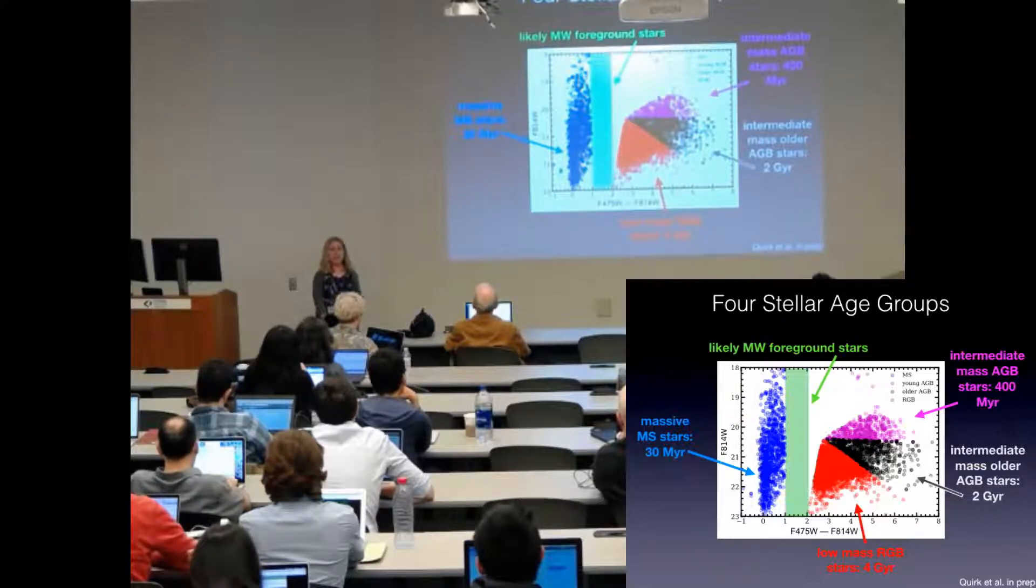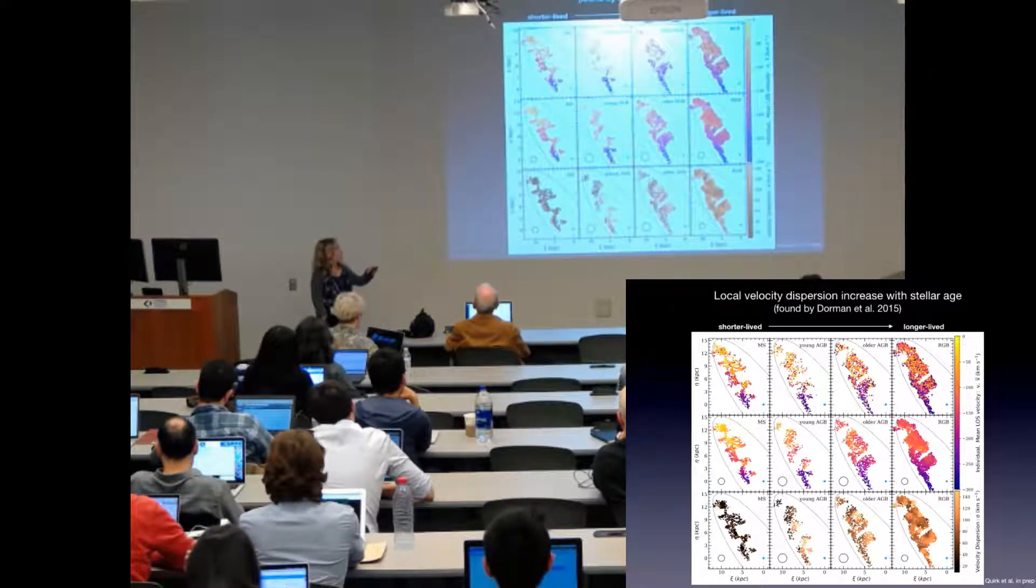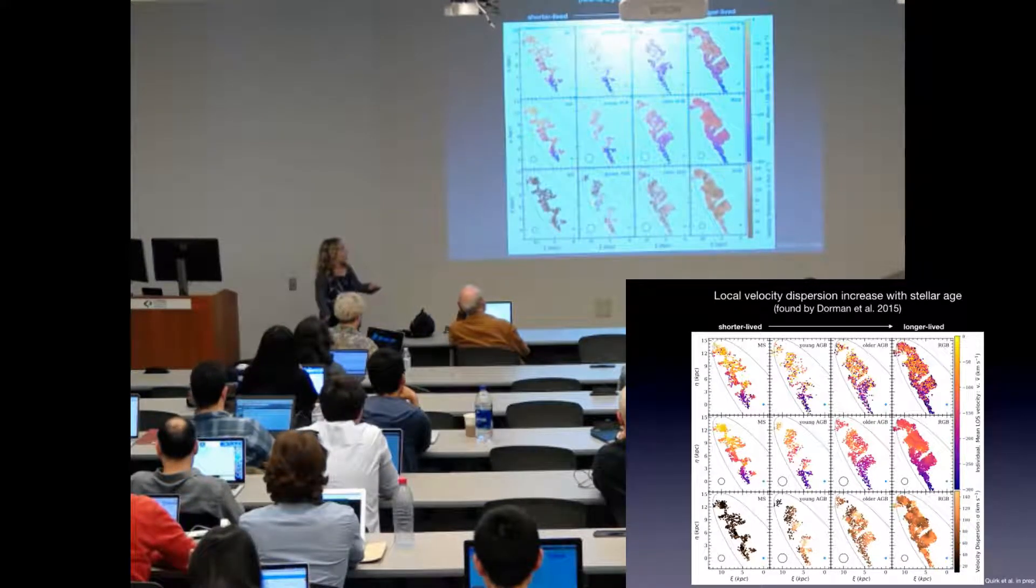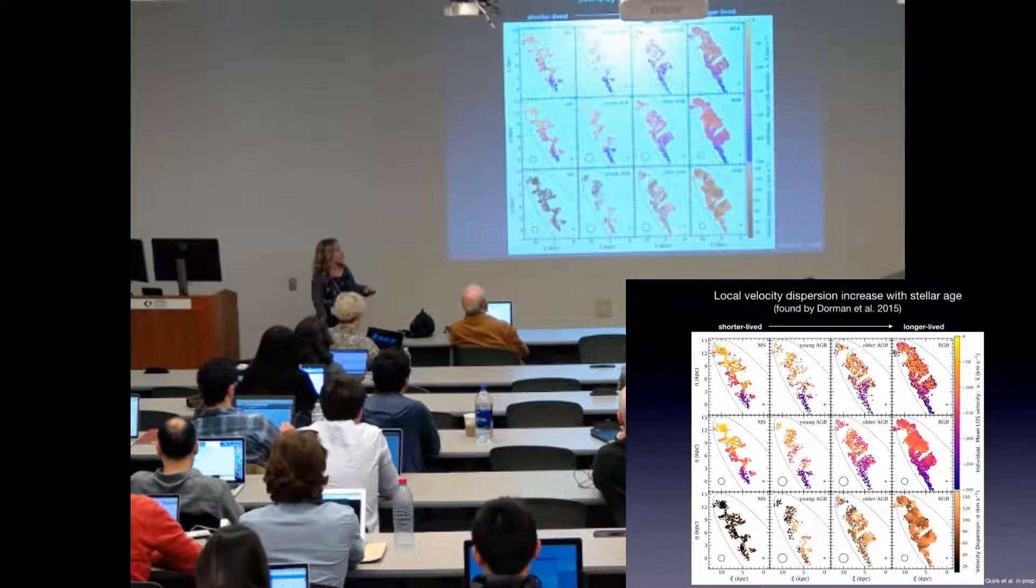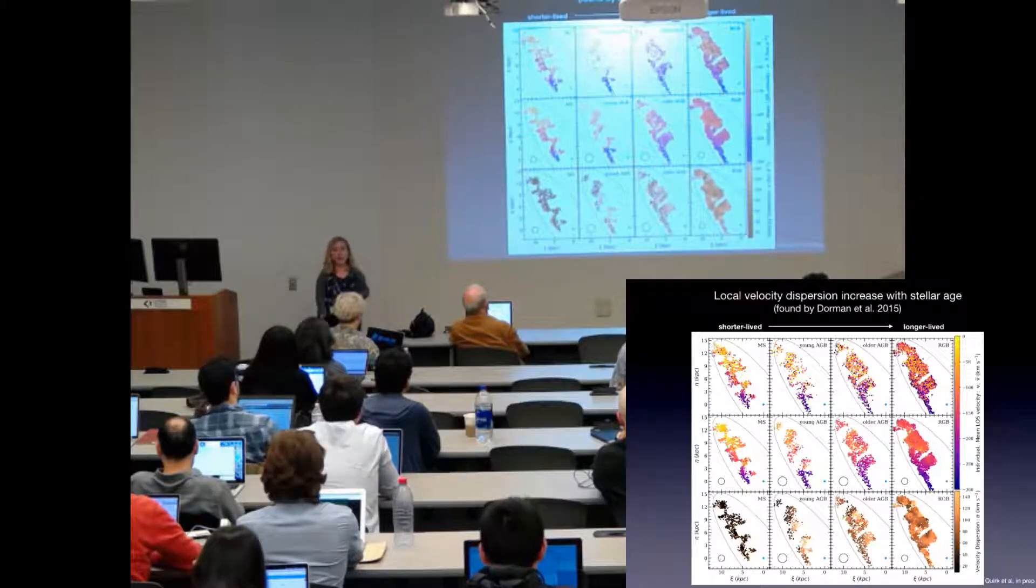I've measured the dynamics of these stars that you can see here. In the first panel it's the shortest-lived main sequence stars in the first column, then young AGB stars, older AGB stars, and the longest-lived red giant branch stars.